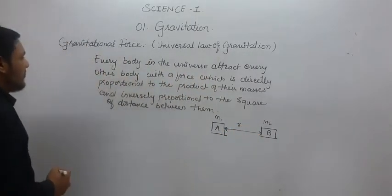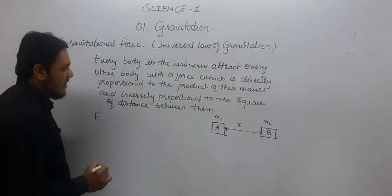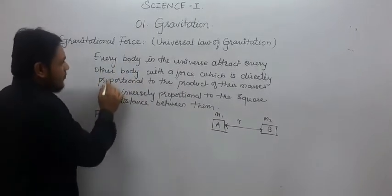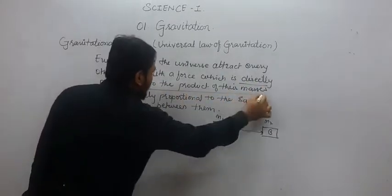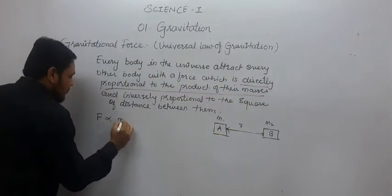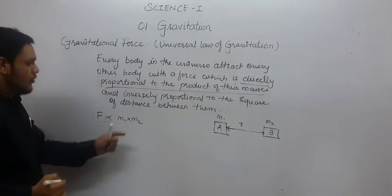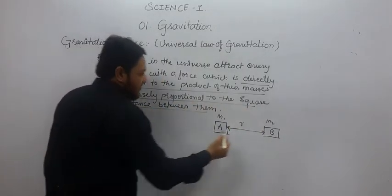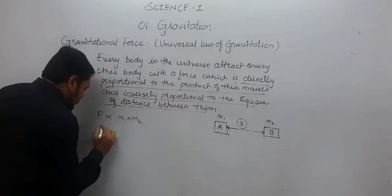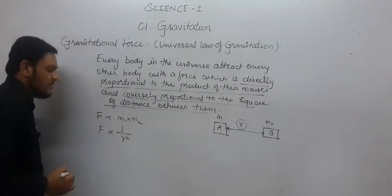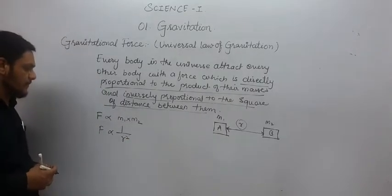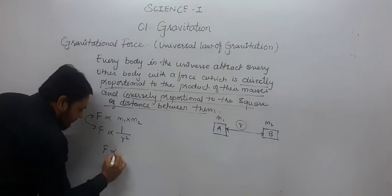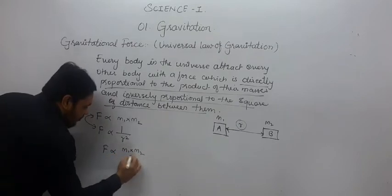So, according to Newton's universal law of gravitation, let F be the gravitational force by which every body attracts every other body in the universe. According to the first statement, this force is directly proportional to the product of their masses: F is directly proportional to m1 multiplied by m2. The second statement says it is inversely proportional to the square of distance between them, so F is proportional to 1 upon r square.